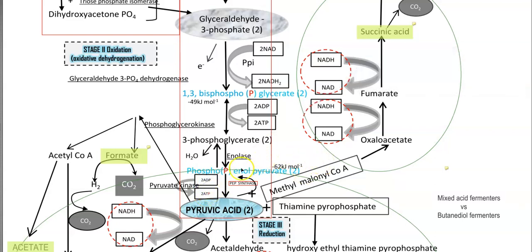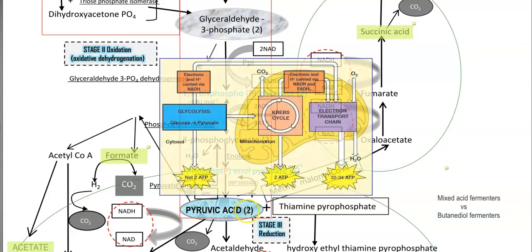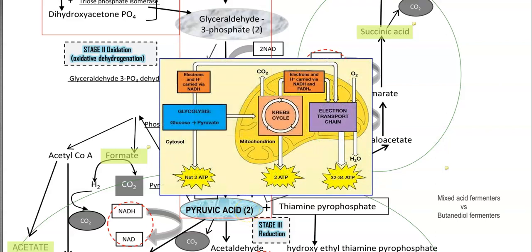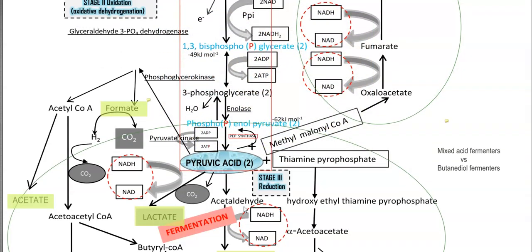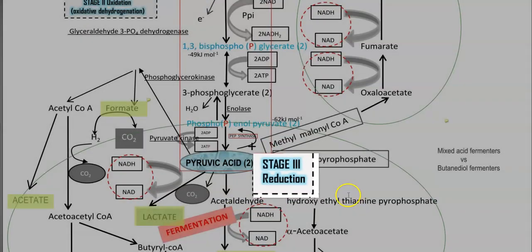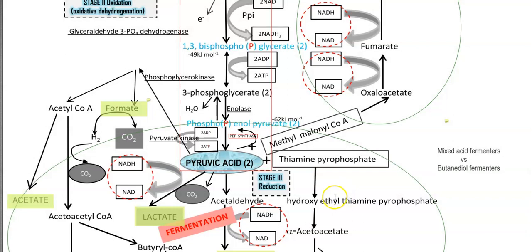At the end of Stage 2, the oxidative dehydrogenation stage, pyruvic acid is produced. This pyruvic acid can be further channeled into the citric acid cycle, or it can move into Stage 3 — the reduction stage — which mainly comprises various kinds of fermentation processes.